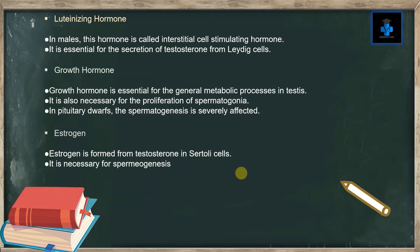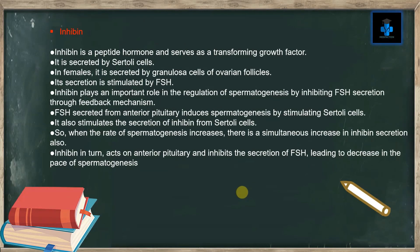Estrogen is formed from testosterone in Sertoli cells and is necessary for spermatogenesis. Inhibin is a peptide hormone and serves as a transforming growth factor. It is secreted by Sertoli cells; in females it is secreted by granulosa cells of ovarian follicles. Its secretion is stimulated by follicle stimulating hormone. Inhibin plays an important role in the regulation of spermatogenesis by inhibiting FSH secretion through a feedback mechanism.